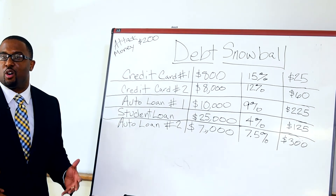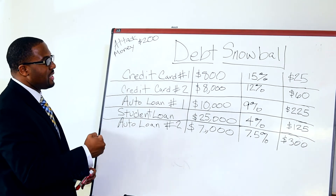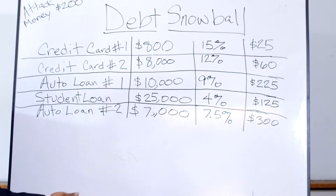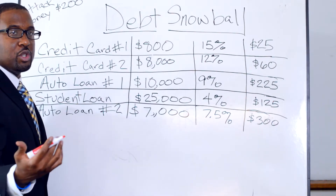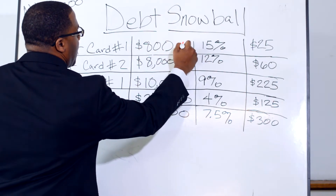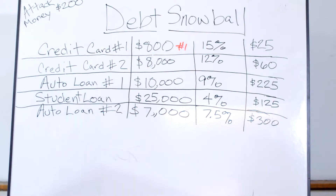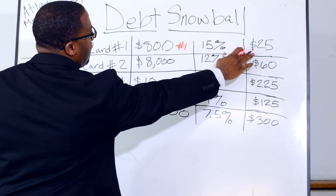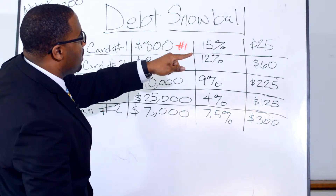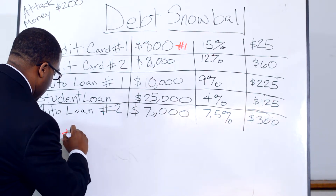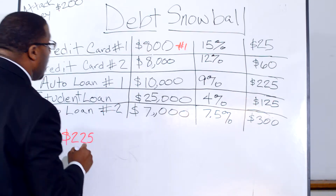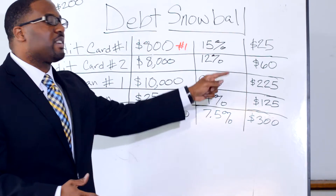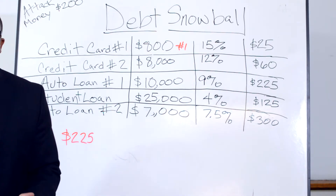The whole purpose of the debt snowball is to pay off your smallest balance and snowball it over to the next one. When we look at everything here, we recognize that the smallest balance is credit card one. So this is the first thing we want to pay off. What John is going to do is take his $200 attack money and apply it to this $800 balance. He's now going to take $200 on top of his $25 minimum, paying $225 a month until credit card one is paid off.